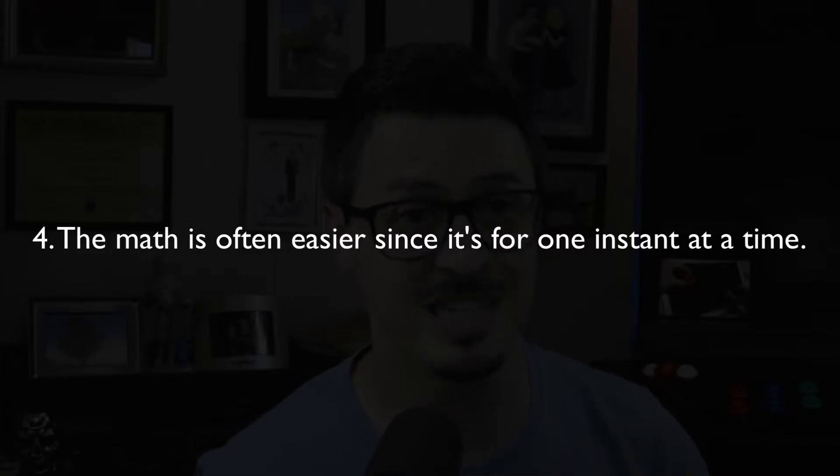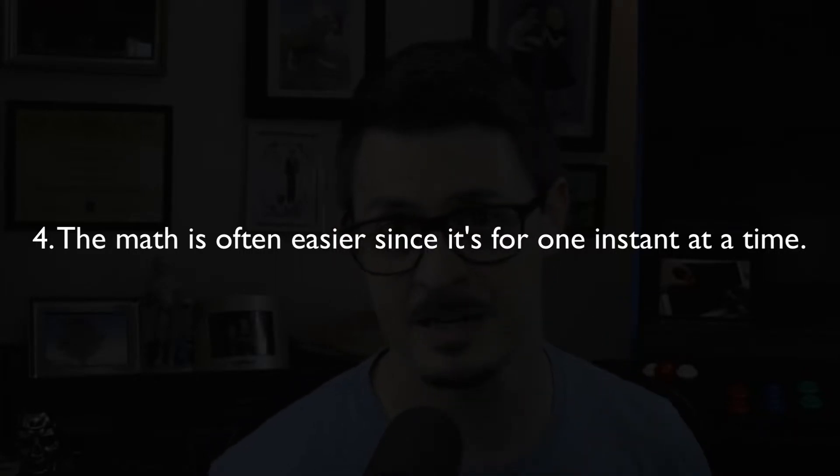Reason number four is that the math is usually simpler because it's one step in one part at a time. A lot of what makes more advanced math advanced is it's trying to predict the future precisely about factors that change over time — air resistance, friction, and other things that cause physics math to involve calculus. Most math in game programming really amounts to piles of arithmetic where every piece of code you write handles what happens in this instant — to the car, to the player, to the rocket.